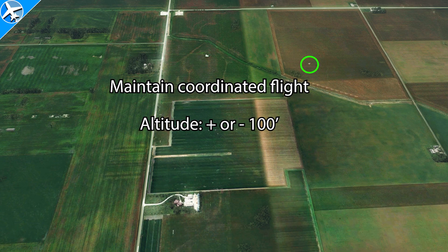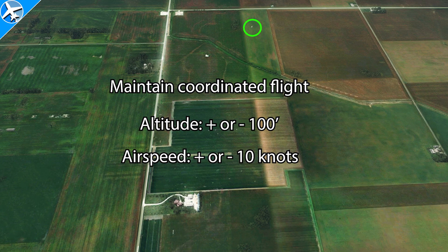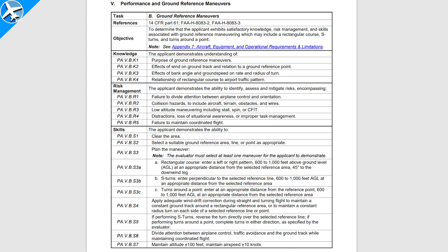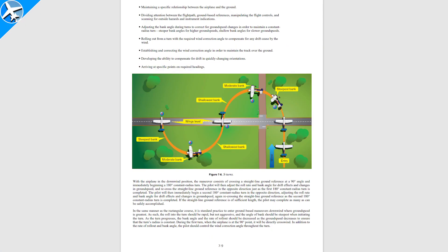Be sure to maintain coordinated flight throughout the maneuver, maintain altitude plus or minus 100 feet, and airspeed plus or minus 10 knots. And that's just one of the ground reference maneuvers required to obtain a private pilot certificate. For more information, you can consult the ACS or Airman Certification Standards, and also chapter seven of the Airplane Flying Handbook. And as always, thanks for watching.